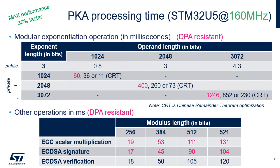Here are the modular exponentiation processing times using different exponents and operand sizes. Other important operations, like ECC scalar multiplication and ECDSA signature and verification, are also mentioned. Values are computed with a clock of 160 MHz.